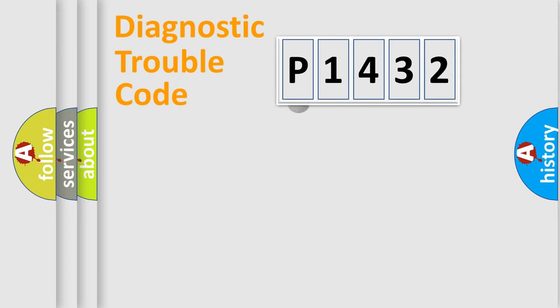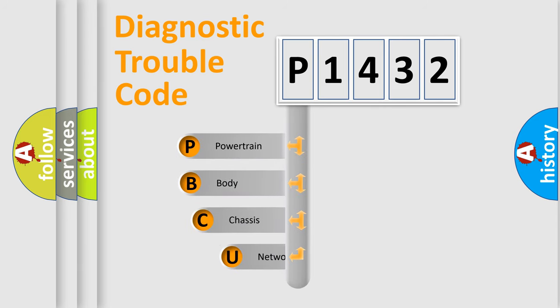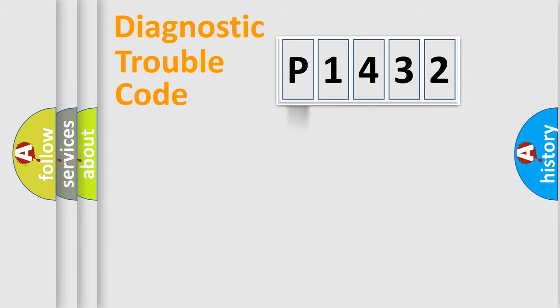First, let's look at the history of diagnostic fault code composition according to the OBD2 protocol, which is unified for all automakers since 2000. We divide the electric system of automobile into four basic units: Powertrain, Body, Chassis, and Network.